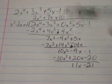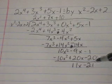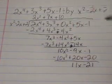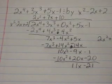Okay, 11x cannot be divided by x squared. So this is your remainder. So all you do for your answer is you take what was on top. 2x squared plus 7x plus 10.